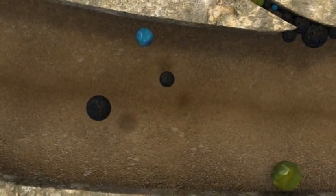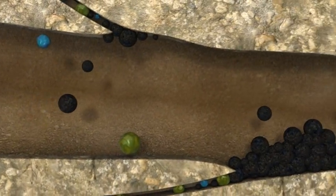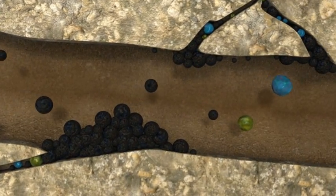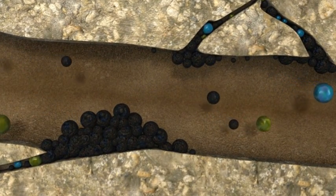Iron sulfide can cause production problems by depositing in and near the perforations. These deposits can restrict the flow of production fluids.